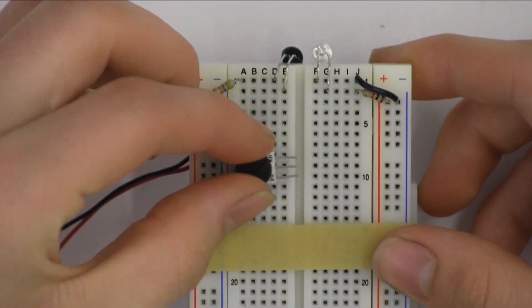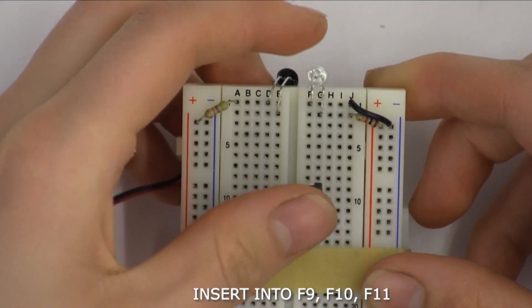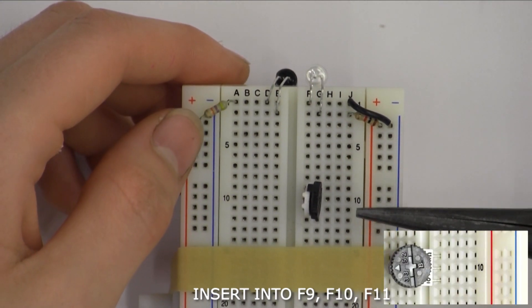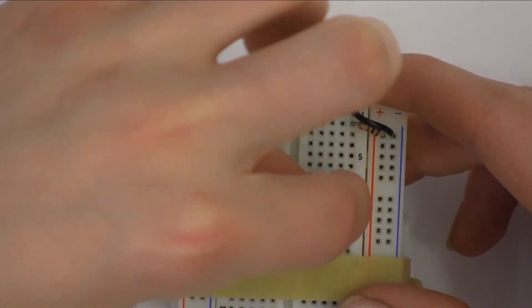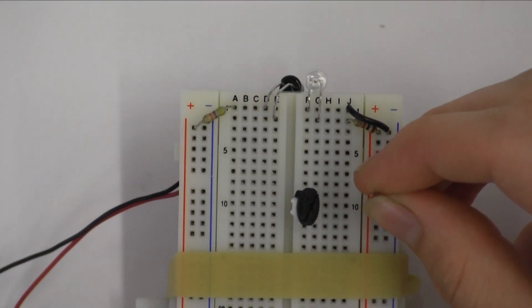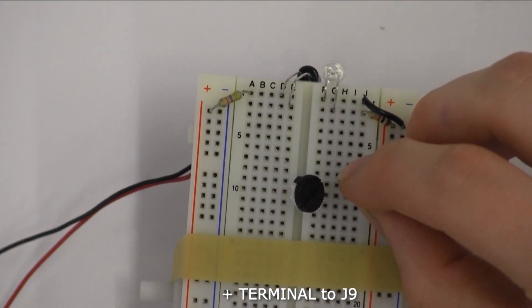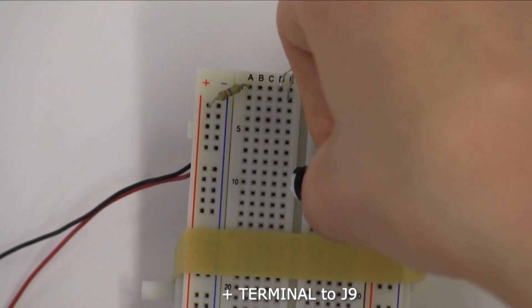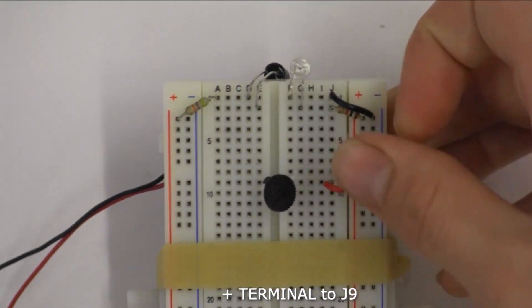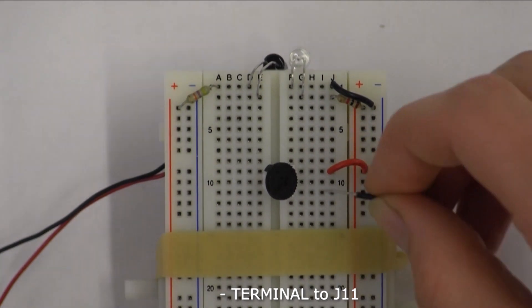Once you're finished with the resistors, plug your potentiometer into port J9, 10, and 11 with the wheel facing ports at the right of the breadboard. Plug a red wire into port J9 going to the positive terminal. A black wire from port J11 to the negative terminal.